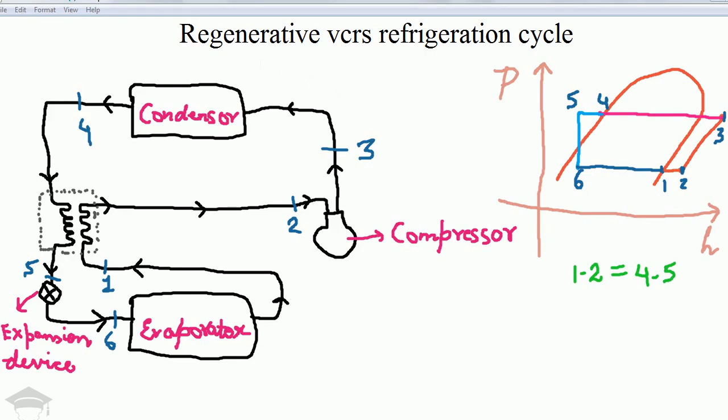This regenerative refrigeration cycle has the following components: first is the evaporator, then compressor, condenser. This is the heat exchanger, that is the regenerator, and then expansion device, and then back to evaporator. The cycle is an anti-clockwise cycle. From 6 to 1, the refrigerant